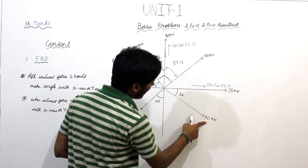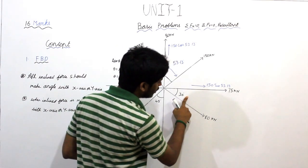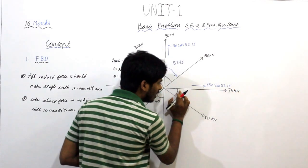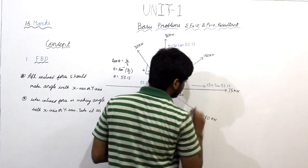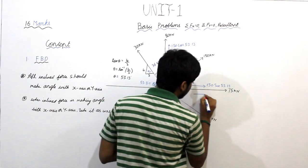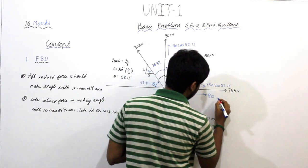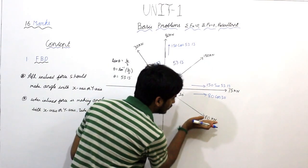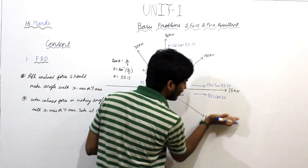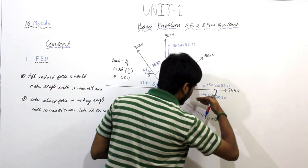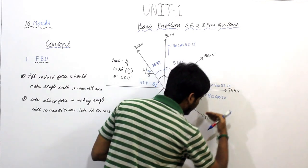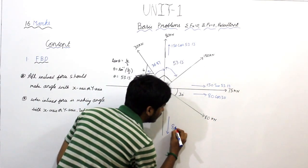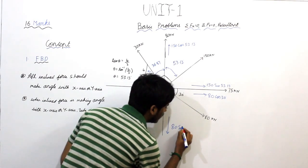80 kN is making an angle of 30 degrees with respect to the x-axis — take it as cos: 80 cos 30. For the horizontal force, it is moving in the right-hand side direction, and for the vertical force, it will be moving in the downward direction. So 80 sin 30.